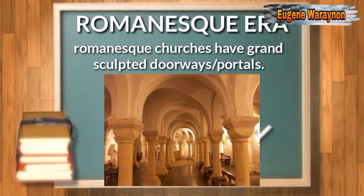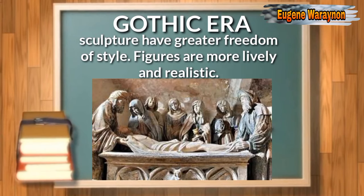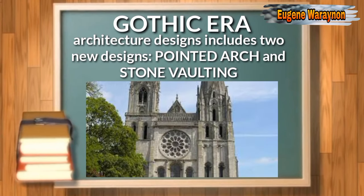Gothic era paintings include stained glass windows, which were created to transform the vast stone interior with warm and glowing color, and at the same time to instruct the congregation. Sculptures have greater freedom of style — no longer laid against walls but began to project outward, and figures are more lively and realistic. Gothic architectural design includes two new devices: pointed arches, which enabled builders to construct much higher ceiling vaults, and stone vaulting on a network of stone ribs supported by pierced and clustered pillars.